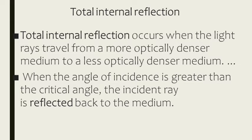Total internal reflection occurs when light rays travel from a more optically denser medium to a less optically denser medium. When the angle of incidence is greater than the critical angle, the incident ray is reflected back into the same medium.